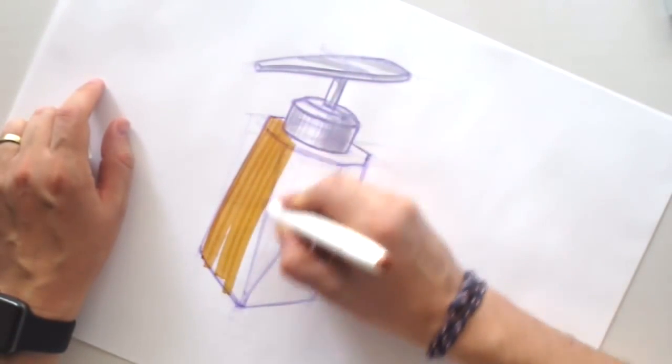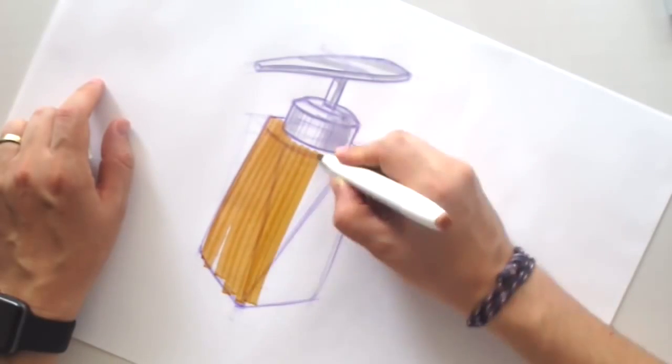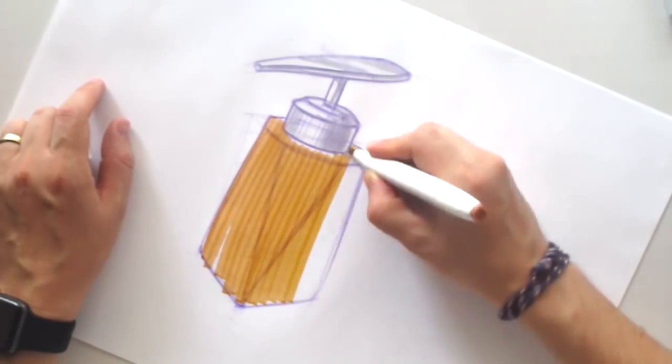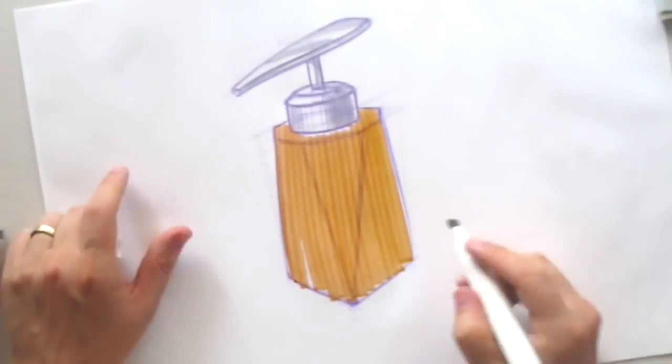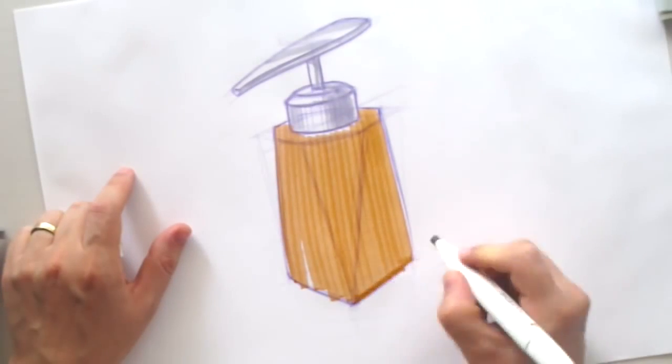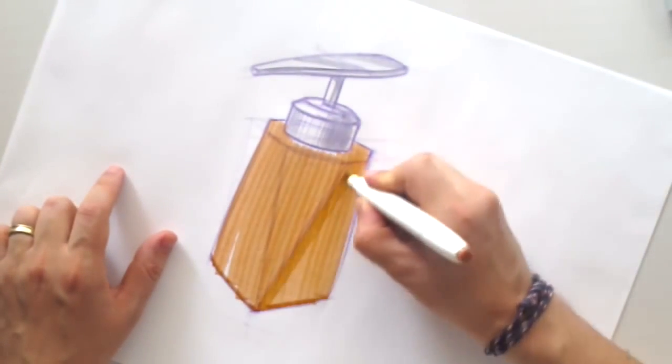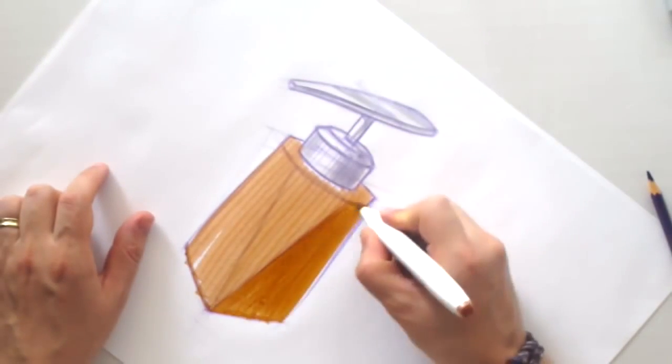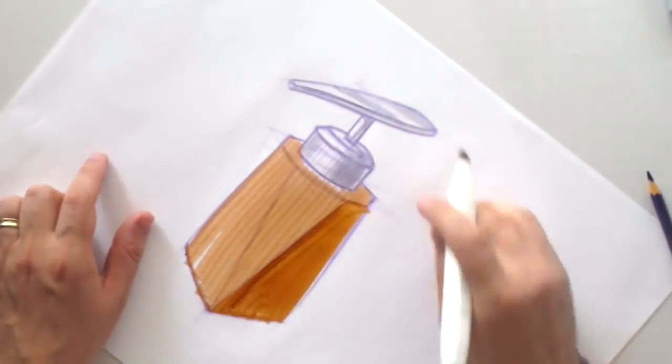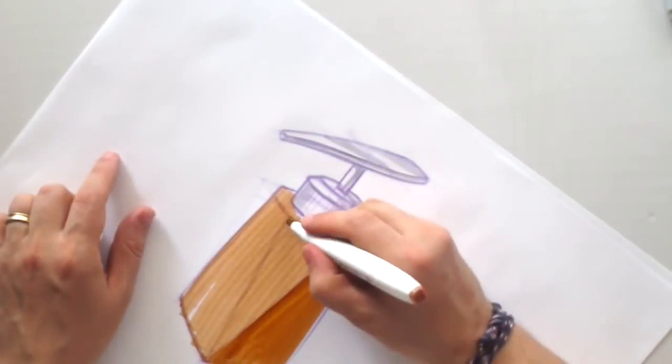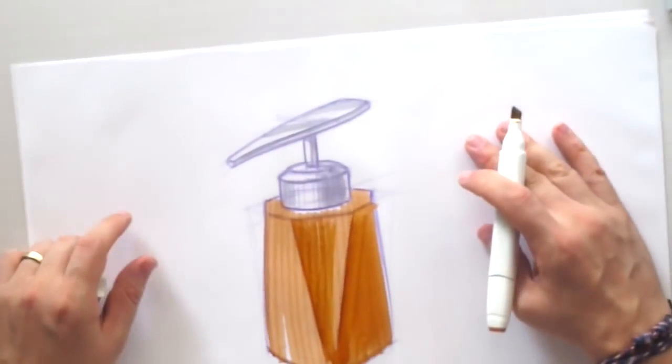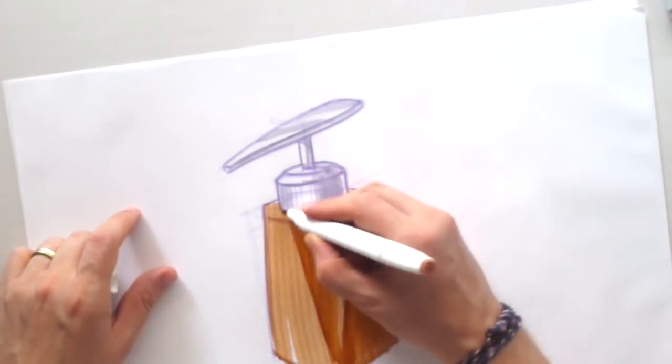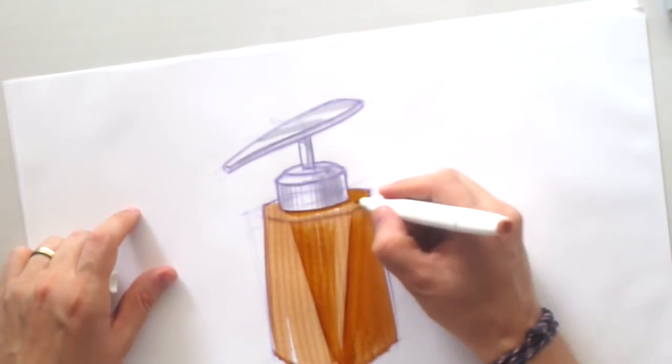And now let's start with the wood. By using another marker. Actually it's Touch Me brand. Sounds sexy. Touch Me brand. So this brand, they have colors that are more juicy, I would say.